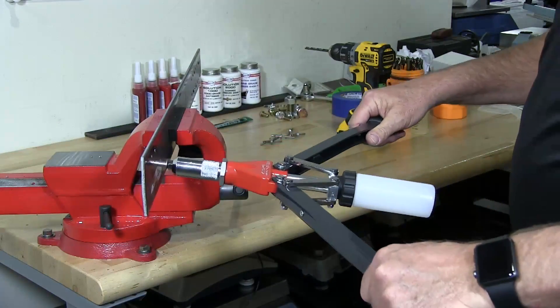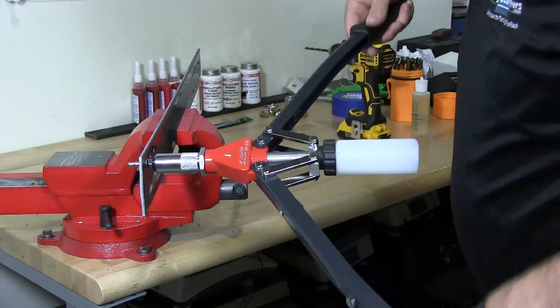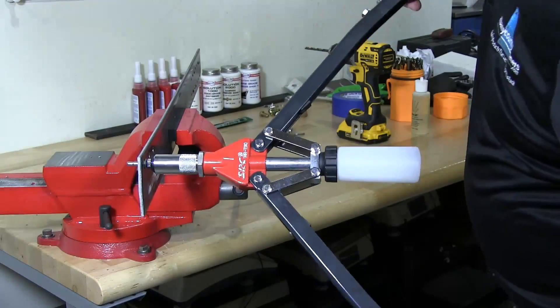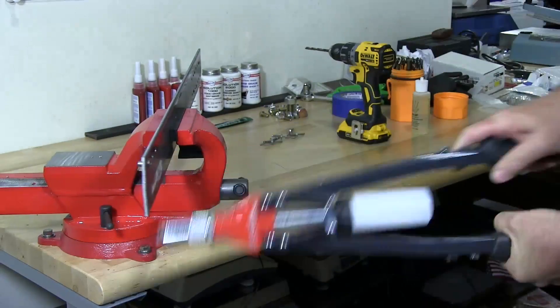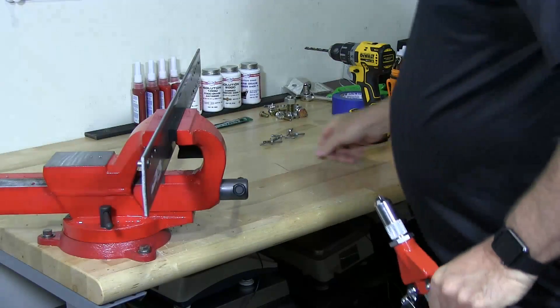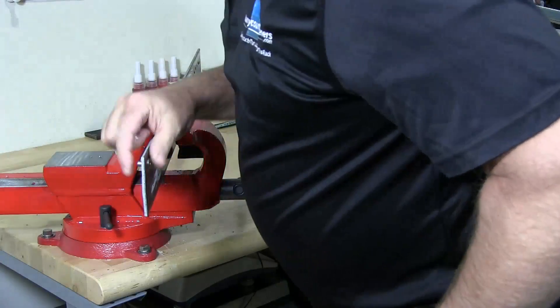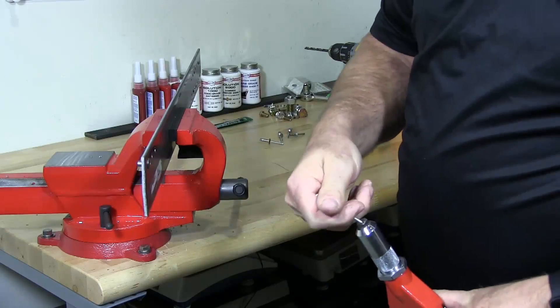I'm going to insert it into the hole and now I'm going to crimp the rivet. That's one and two. Bam. So it's a two-step process. I'm going to do three of these. That's the first one.